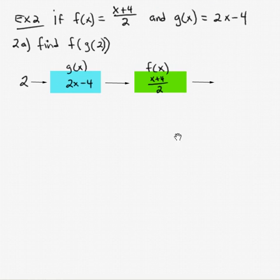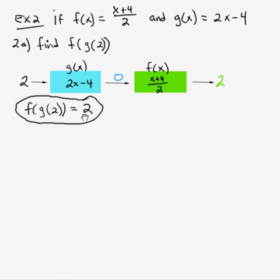So what we need to do is we need to take 2, substitute that into function g. The end result that comes out of that, substitute that into function f. So we're going to take 2 times 2, which is 4, minus 4, which gives us 0. That 0 then, the end result, the range of g of x is going to become the domain of f of x. Replace x with 0. 0 plus 4 is 4. 4 divided by 2 is 2. So we can say that f of g of 2 is 2.